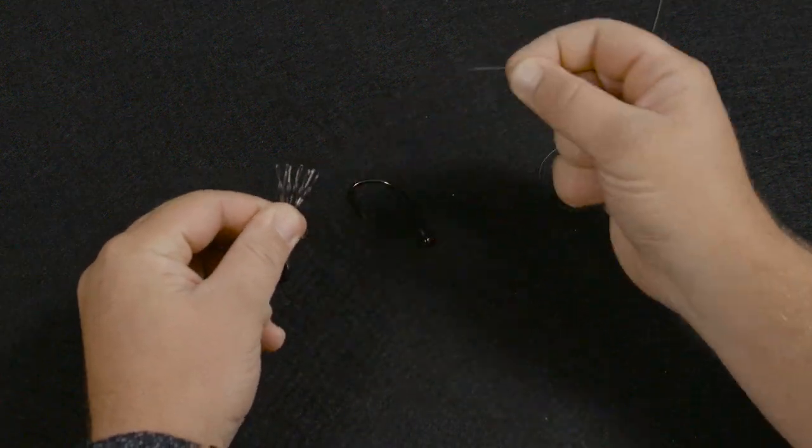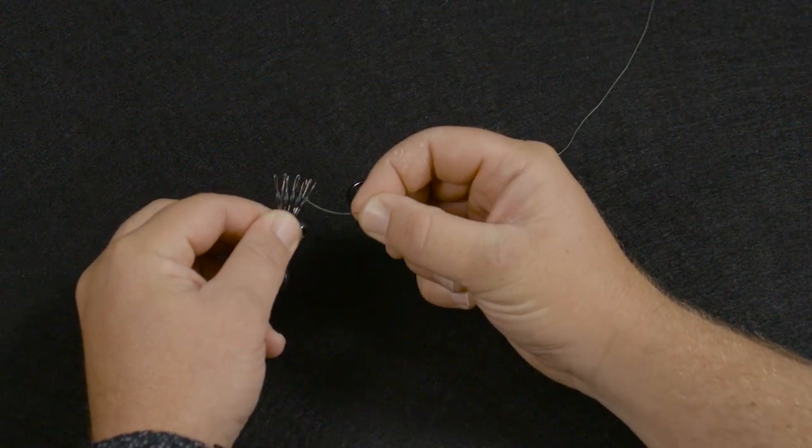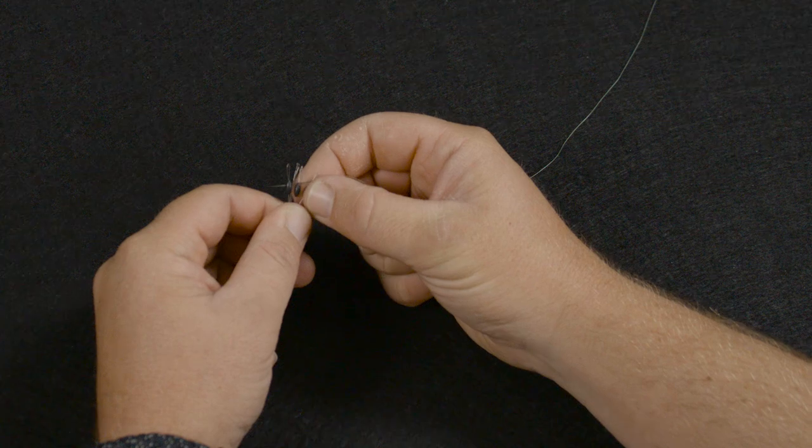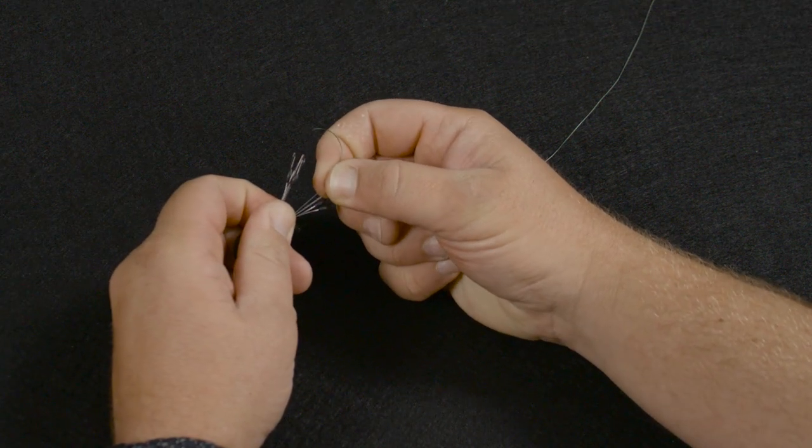You're going to take the end of your line before you rig anything, put any weight or hook on, and slide that through one of those loops. Then this bobber stop just slides right onto the line itself.